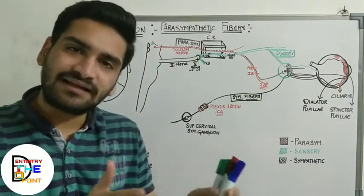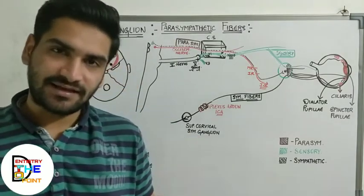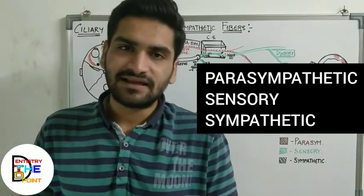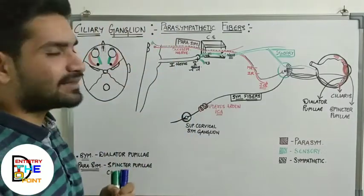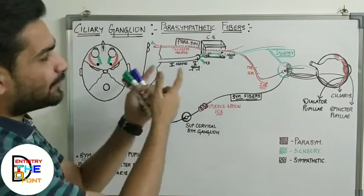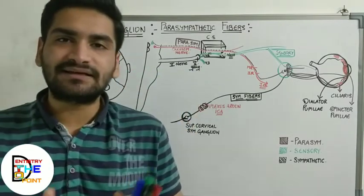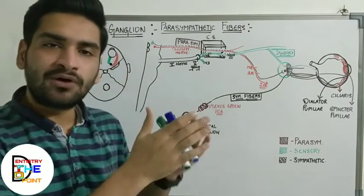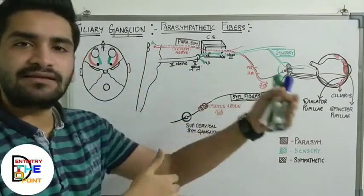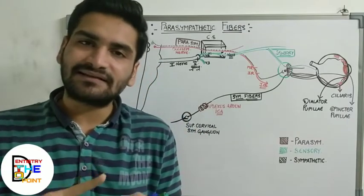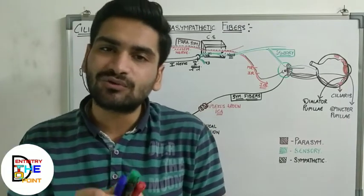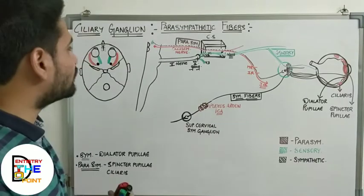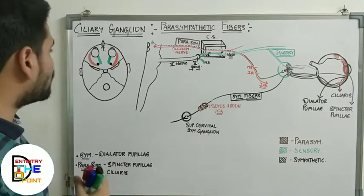The ciliary ganglion has three connections: parasympathetic, sympathetic, and sensory. This is a parasympathetic ganglion because only the parasympathetic fibers relay in this ganglion and then move forward. The sympathetic and sensory fibers do not relay in this ganglion.